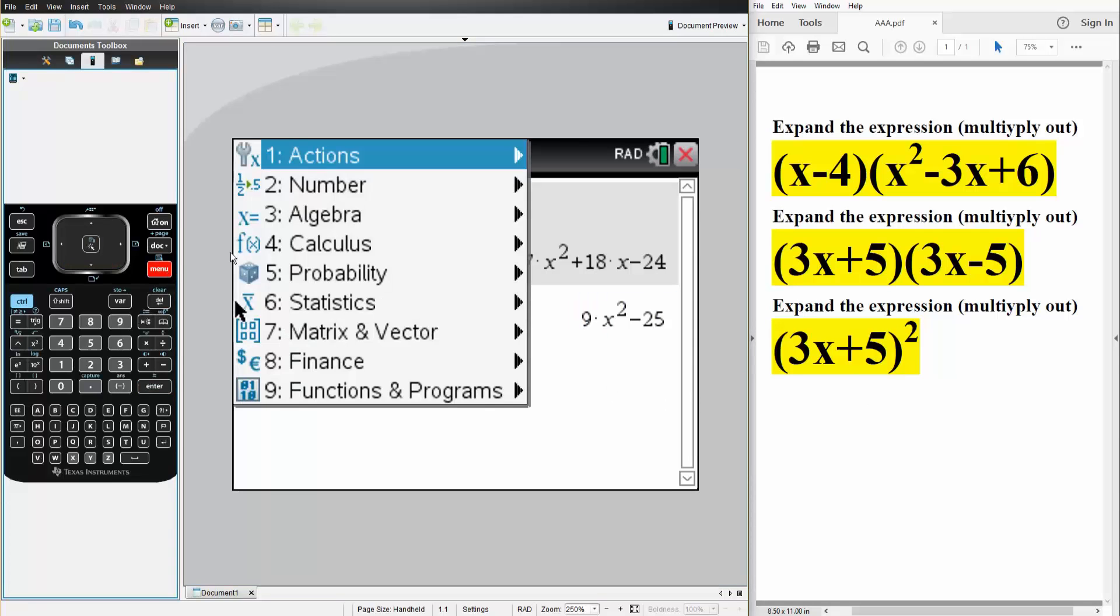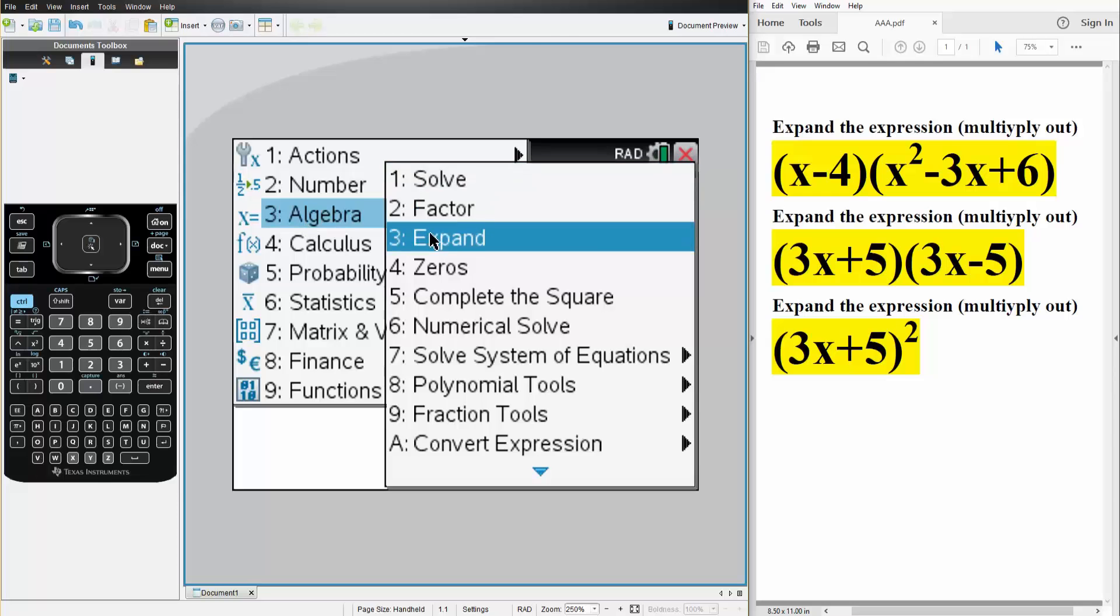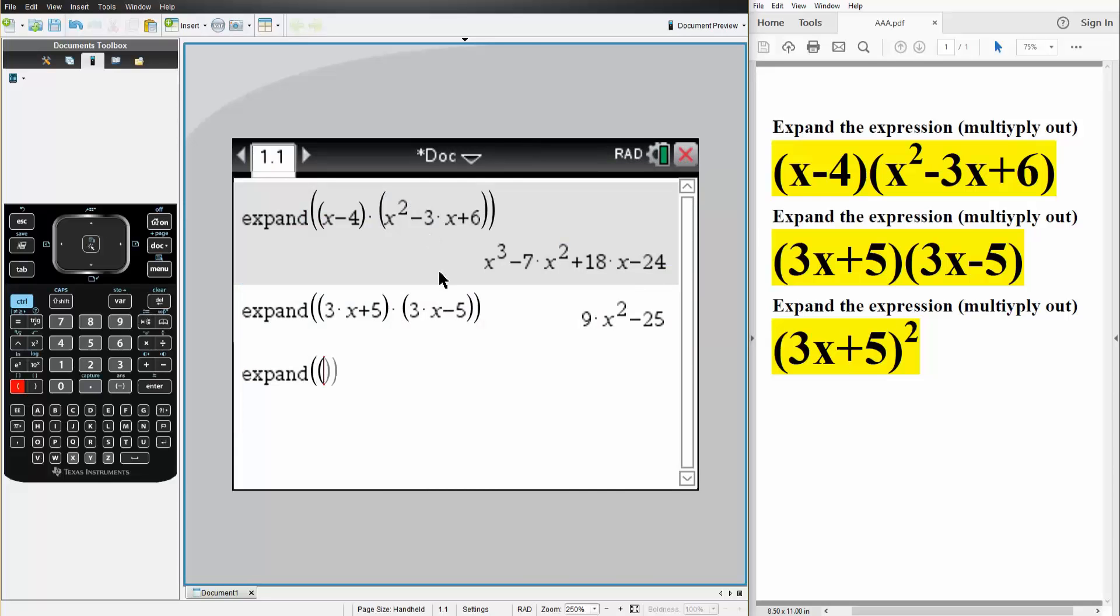So we hit menu, 3, algebra, 3, expand. So we have a parentheses, 3 times x plus 5, close parentheses, and we square it. And now we simply hit enter, and this would be the final answer,